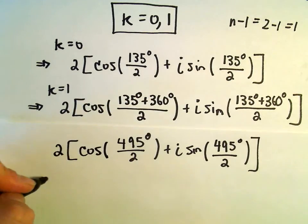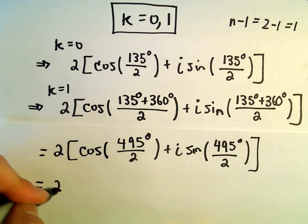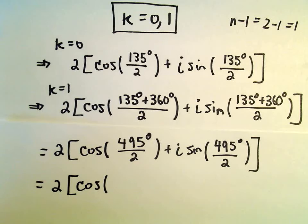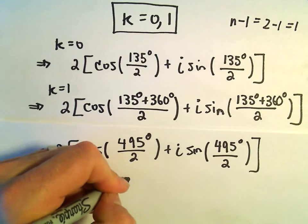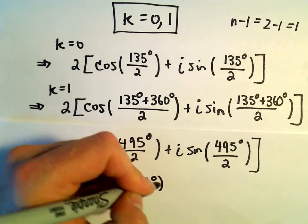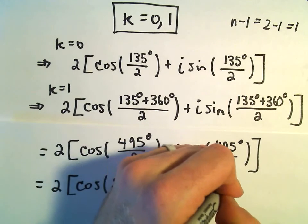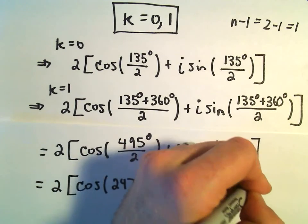Alright, so let's just keep cleaning this up here a little bit. So 495 divided by 2, so 495 divided by 2, that's just going to give us 247.5 degrees, plus i times sine of 247.5 degrees.